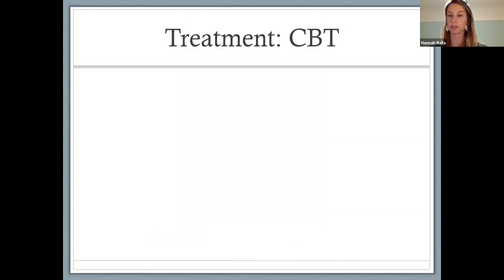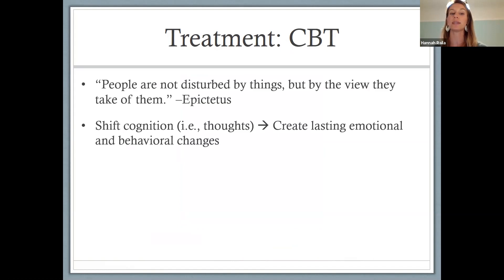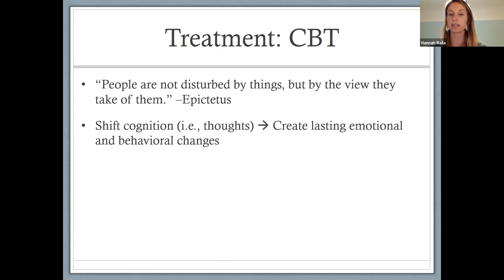A psychological gold-standard treatment for depression is cognitive behavioral therapy, or CBT. CBT is rooted in the idea — as Epictetus said — that people are not disturbed by things, but by the view they take of them. If we can shift our thoughts, the C in CBT stands for cognitive, which is synonymous for thoughts. If we can shift our cognitions, we can create lasting emotional and behavioral changes, because it's not the things themselves that matter — it's what we think about them that influences our emotions.